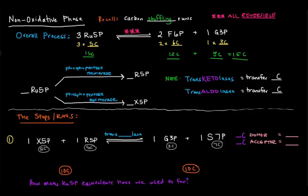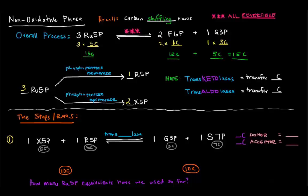Starting with three ribulose 5-phosphates: Ru5P can be turned into R5P (via phosphopentose isomerase) or into X5P (via phosphopentose epimerase). Epimers are diastereomers that differ in chirality at only one chiral center. From three Ru5Ps, we make one R5P and two X5Ps. I encourage you to look through the structures of these compounds, though I haven't drawn them here for simplicity.